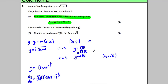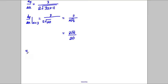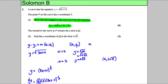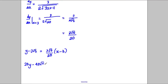We've got our gradient, so now we need to put it in the correct form. So y subtract 2 root 5 equals 3 root 5 over 20 times x subtract 3. Multiplying everything through by 20 gives 20y subtract 40 root 5 equals 3 root 5 times x subtract 9 root 5.